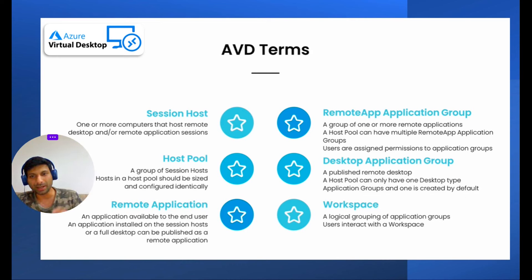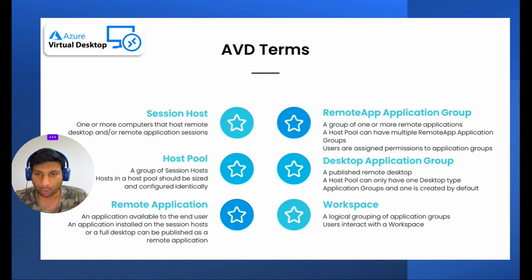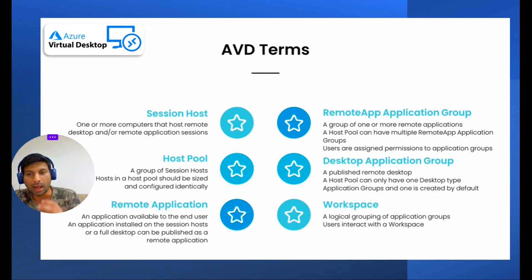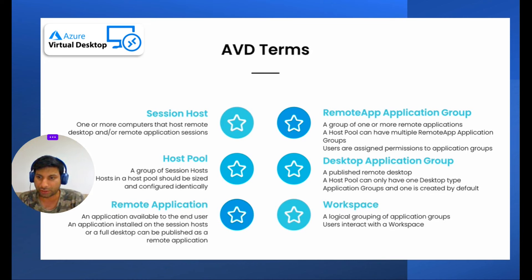Next is remote application — a group of non-desktop applications available to end users, such as Notepad. An application installed on the session host or a full desktop can be published as a remote application. A host pool can have multiple remote app application groups, and users are assigned to an application group with access to any application in that group. A desktop application group provides a full desktop experience; a host pool can have only one, created by default and removable if not needed. Users are assigned permissions to the desktop application group similarly to remote app. Finally, a workspace is a logical grouping of application groups — this is what the user interacts with.